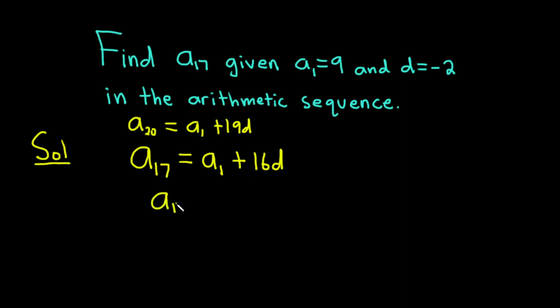So we have a sub 17 is equal to a sub 1, which is 9, plus 16, and then we're told d, which is negative 2. So the 17th term, a sub 17, is equal to 9. 16 times negative 2 is negative 32.